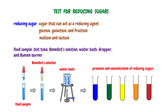Interpretation of results is based on the observed color changes after conducting the reducing sugar test. A blue color indicates the absence of reducing sugars. A green color suggests trace amounts. A yellow color signifies a low amount of reducing sugar. An orange color indicates a moderate amount. And a brick red color signifies a large amount of reducing sugar in the tested food sample. This color scale serves as a qualitative guide to assess the concentration of reducing sugars present in the sample.